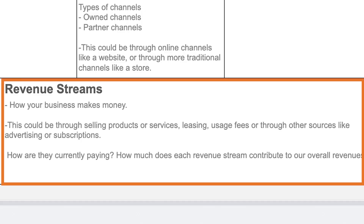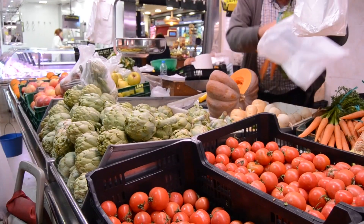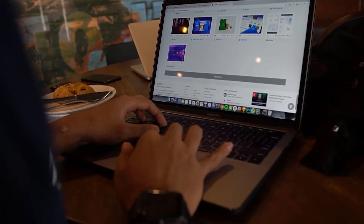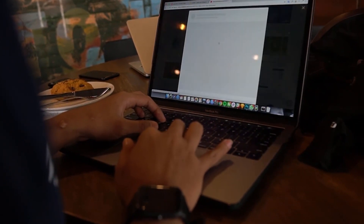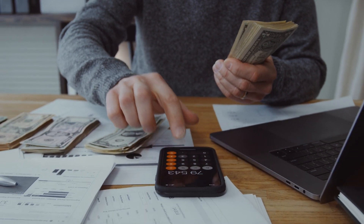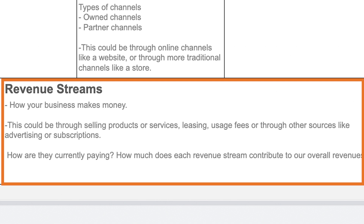The next key element is your revenue streams — simply how your business makes money. This could be through selling products or services, leasing, usage fees, advertising, or subscriptions. Every business will have a way of making money that makes sense to it. Your business can also have more than one revenue stream, and you want to consider what all the potential revenue streams are and what their individual contribution to your overall revenue will be.